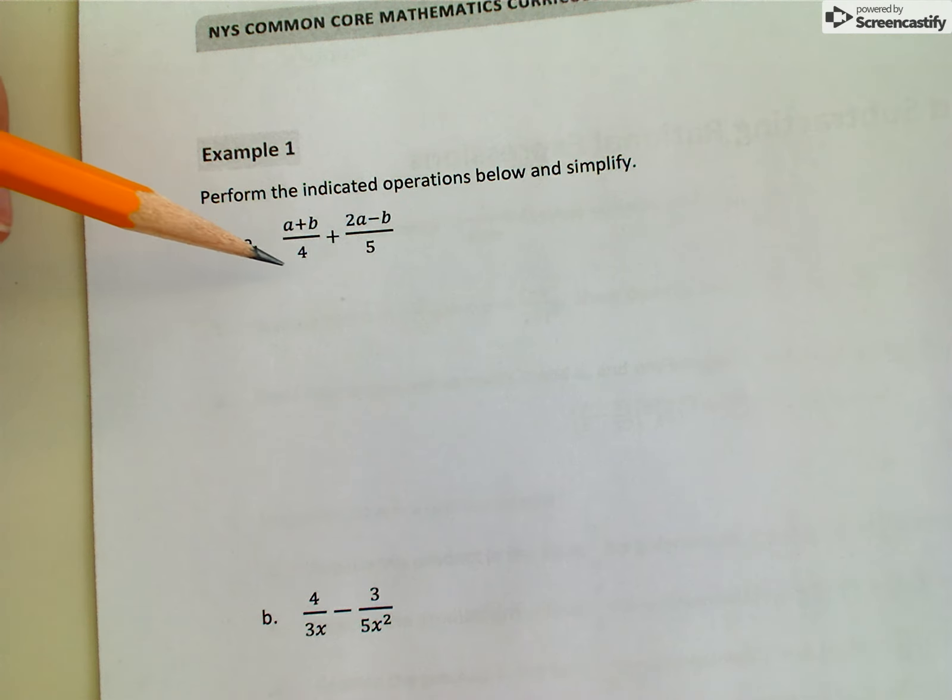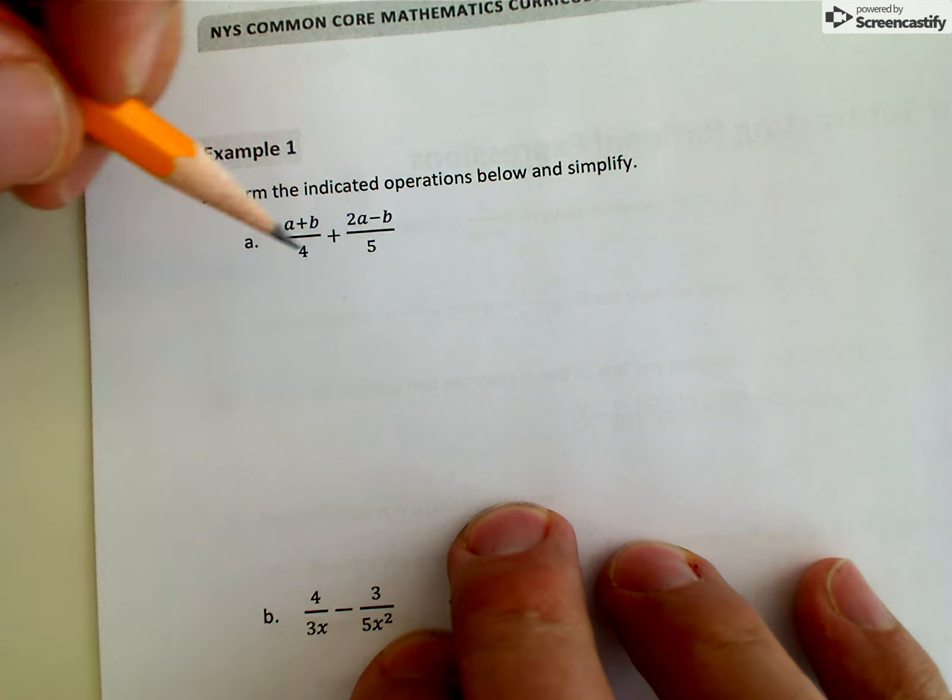It's kind of nice on this problem because the denominators are just integers. I can see that the least common multiple between 4 and 5 is 20. So I would like to make the denominators of these two rational expressions equal to 20.